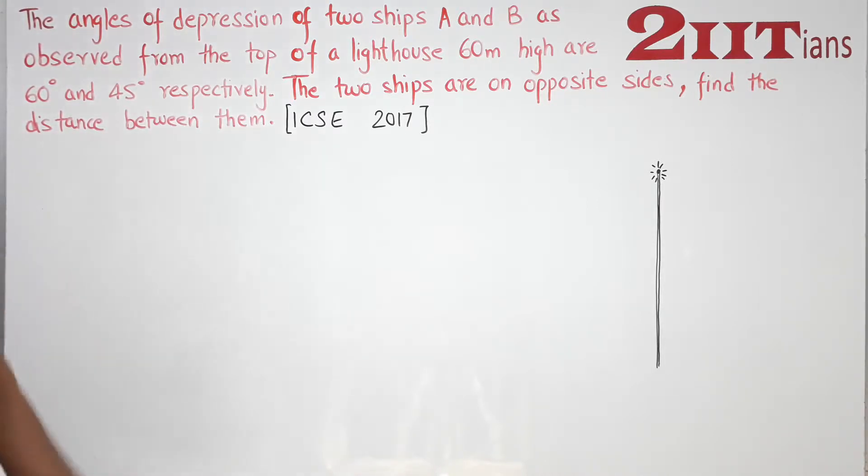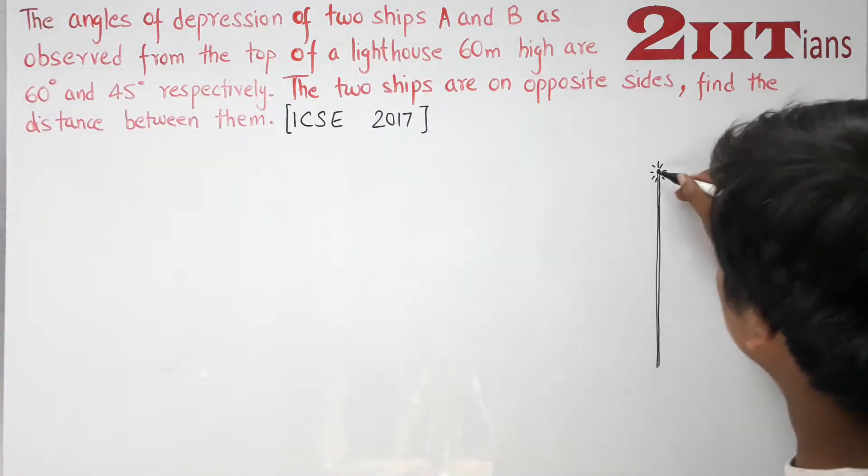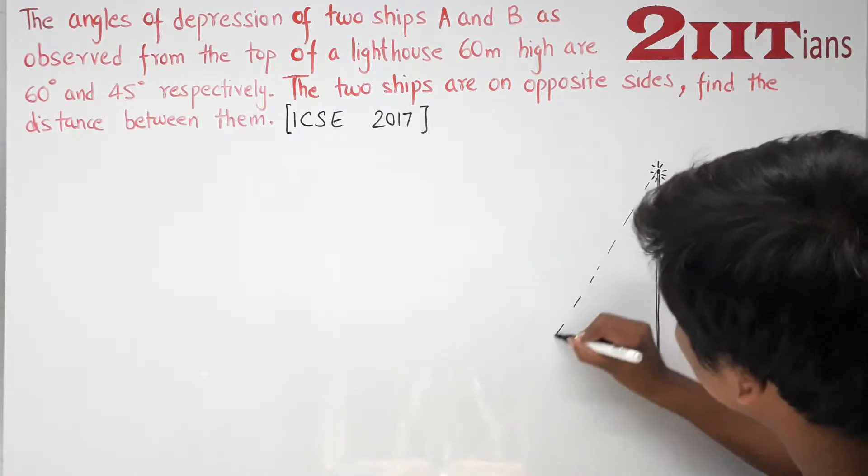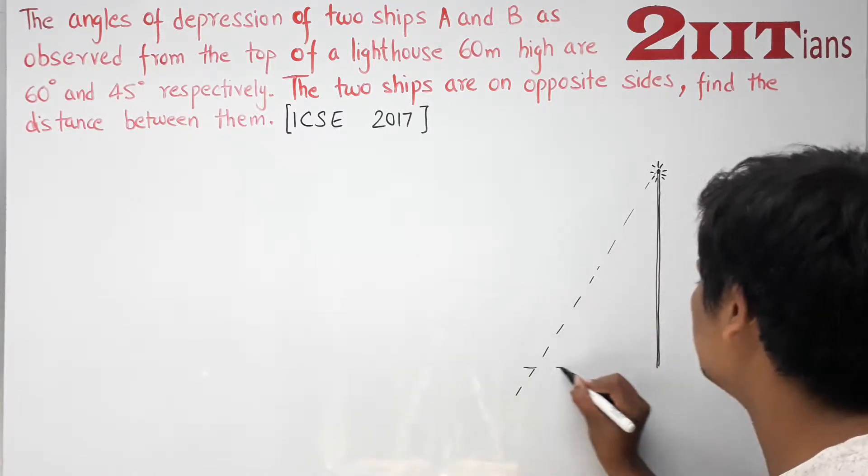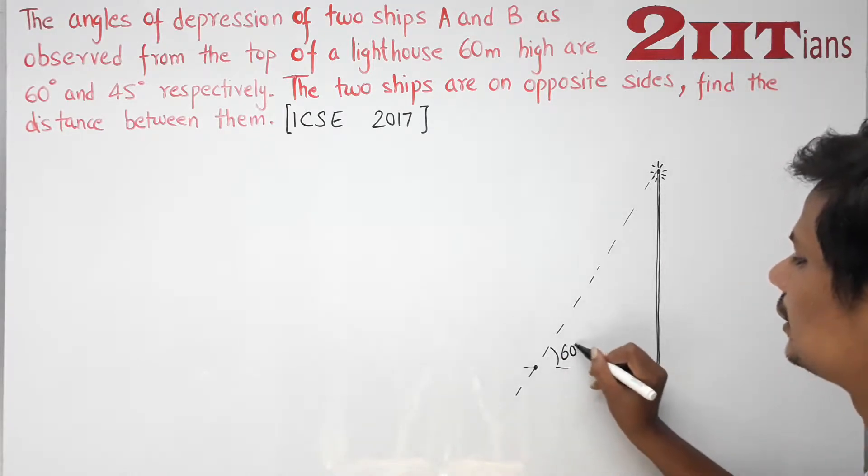So 60 degrees for ship A is written respectively. So here we can make 60 degrees. This is the point, this is 60 degrees.